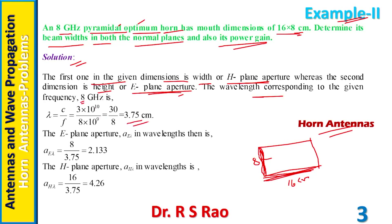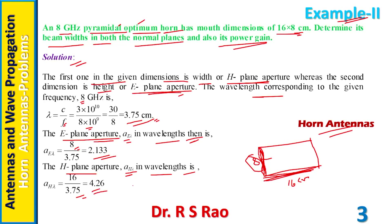The wavelength corresponding to 8 GHz is 3.75 cm, found using lambda equals c over f, where c is 3×10^10 cm/s and f is 8×10^9 Hz. The E-plane aperture in wavelengths is ae_lambda equals 8 divided by 3.75, which gives 2.133. The H-plane aperture in wavelengths is ah_lambda equals 16 divided by 3.75, which gives 4.26.